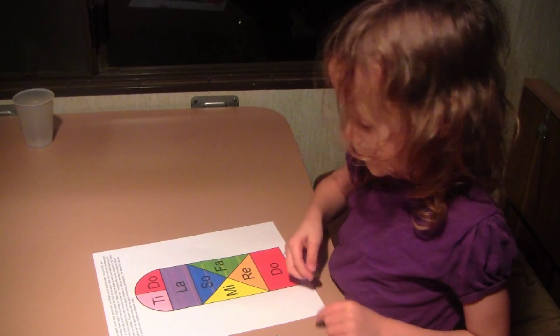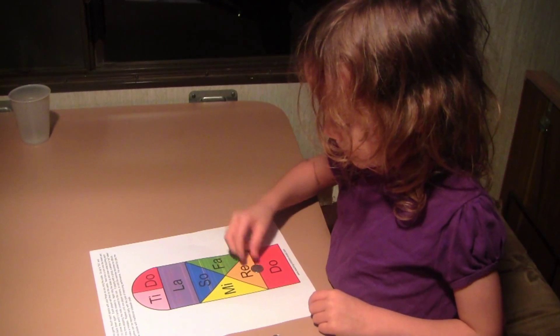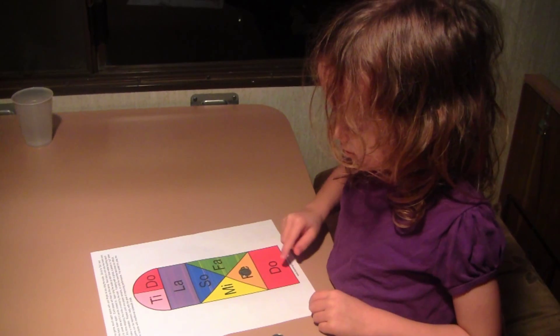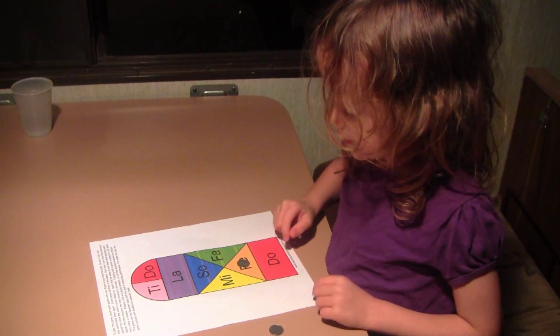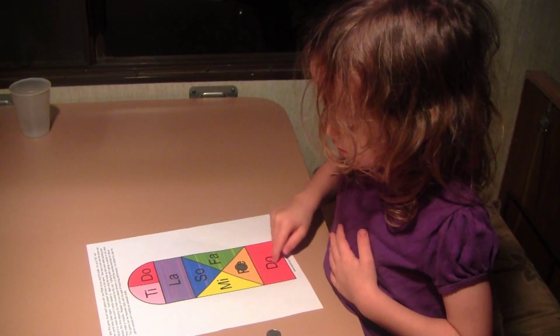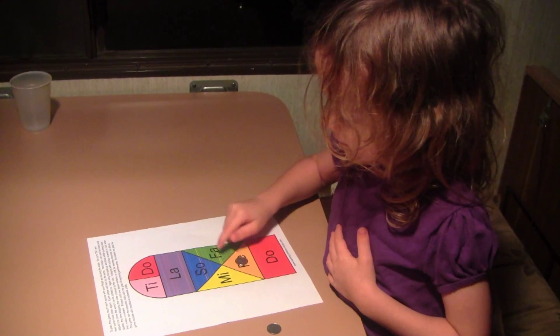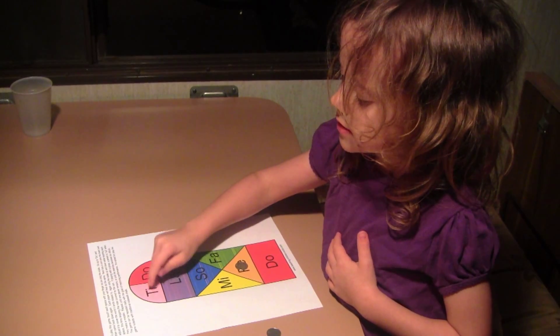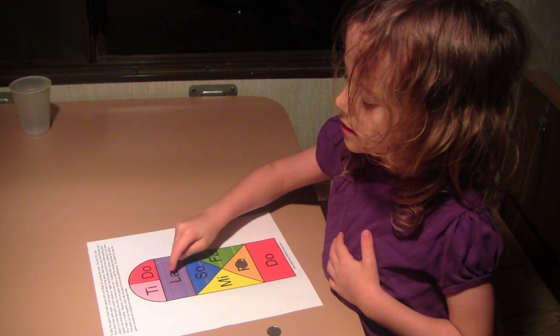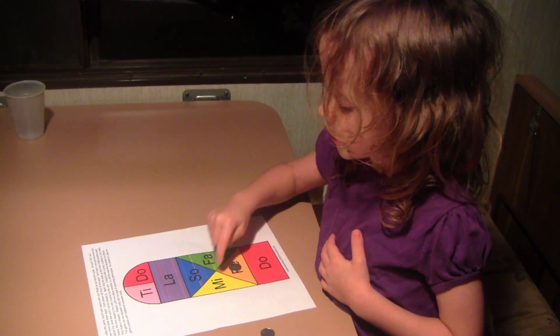And then you flip a coin onto one of the spaces. Do, and this is it. Do, Mi, Fa, So, La, Ti, Do. Do, Ti, La, So, Fa, Mi, Do.